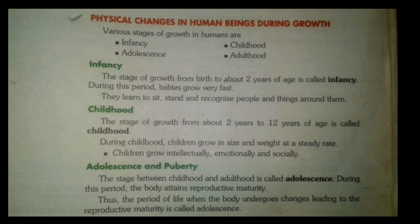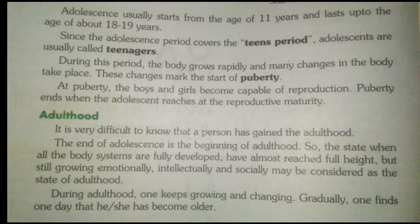The next stage is adolescence and puberty. The stage between childhood and adulthood is called adolescence. During this period the body attains reproductive maturity. The period of life when the body undergoes changes leading to reproductive maturity is called adolescence. It usually starts from the age of 11 years and lasts up to 18 to 19 years. Since adolescence covers the teen years, adolescents are usually called teenagers.